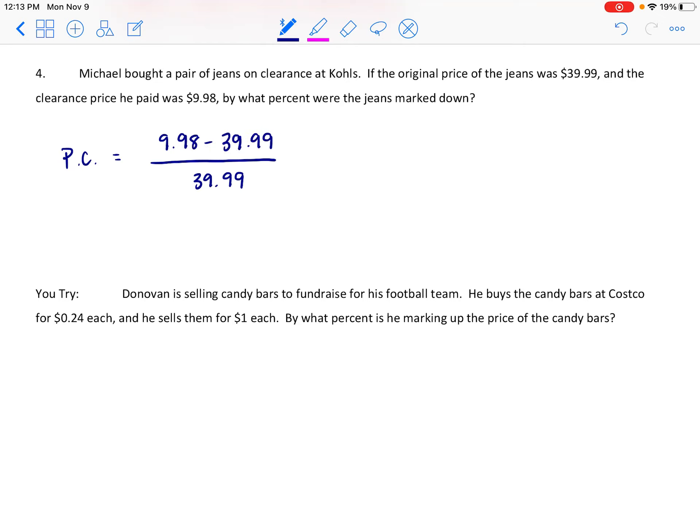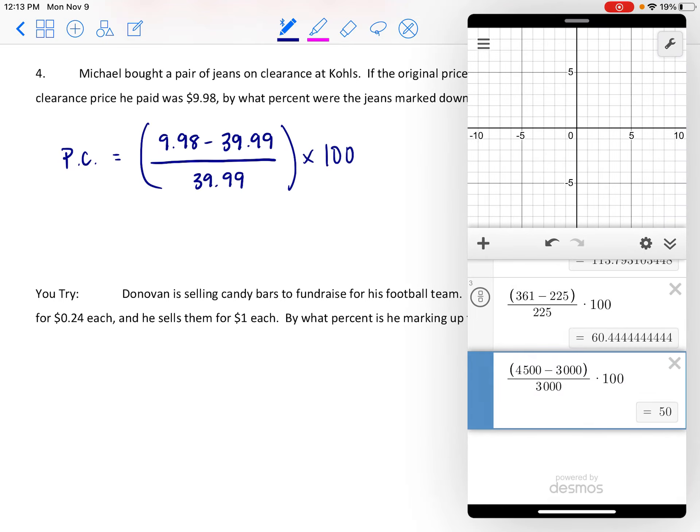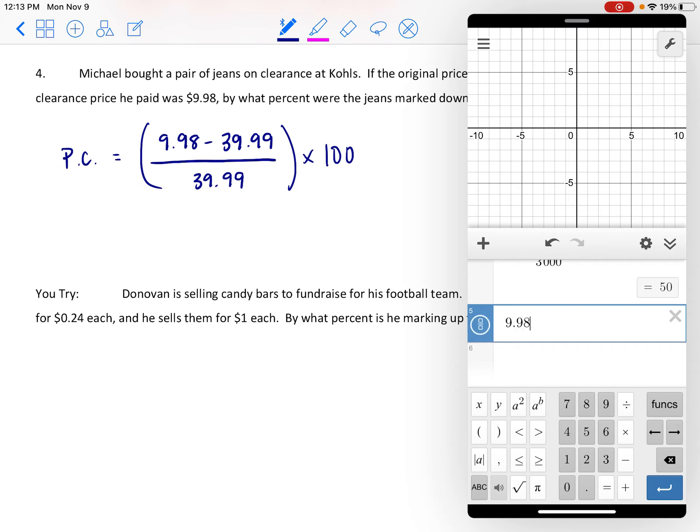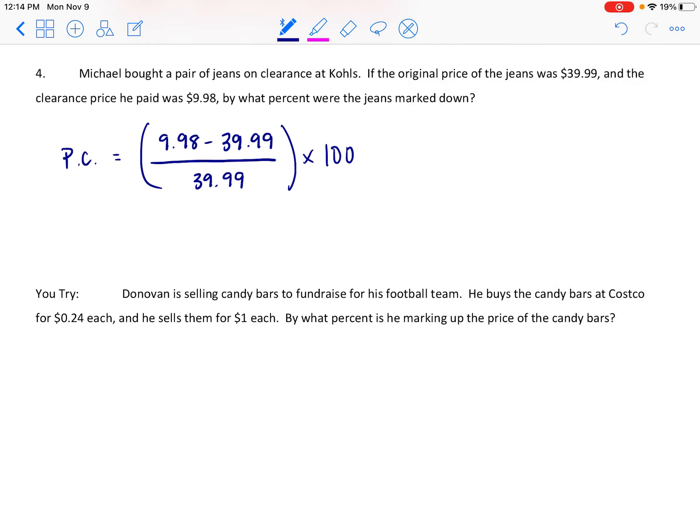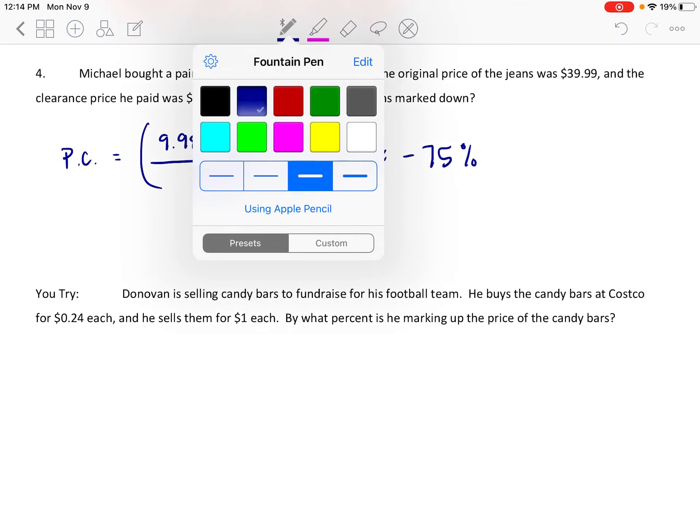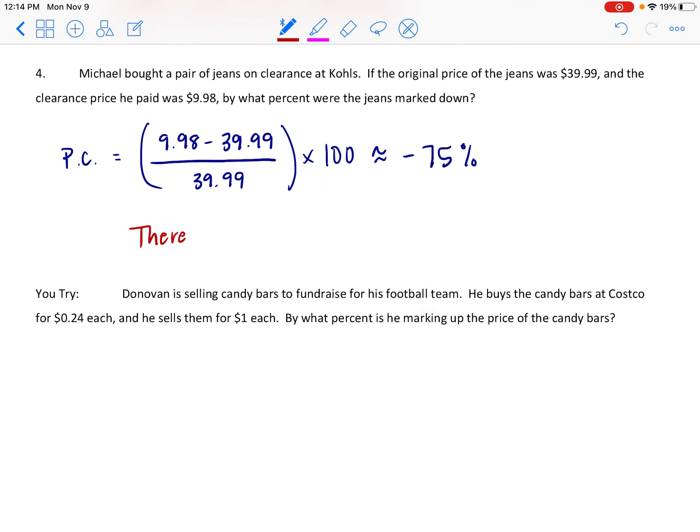I want the smaller number to go first because this is a markdown, this is a percent decrease, so I want to end up with a negative. And now we're going to multiply by 100 and see what we get. So $9.98 minus $39.99, all of that divided by $39.99, and then multiplied by 100, and we get a negative 75 percent. So there was a 75 percent markdown.